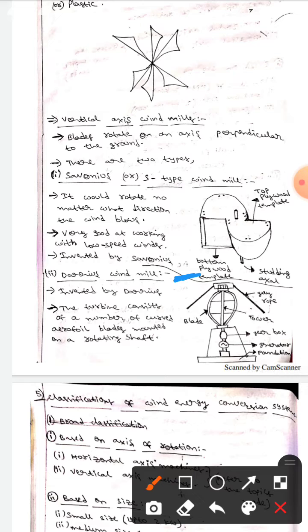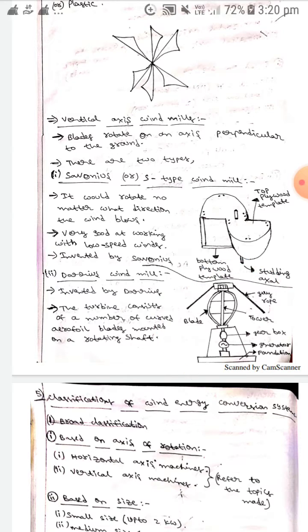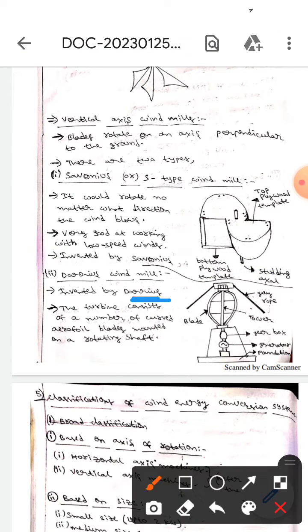The next one is Darius windmill. This diagram represents the Darius windmill. It is invented by Darius. The turbine consists of a number of curved airfoil blades. They are mounted on a rotating shaft.